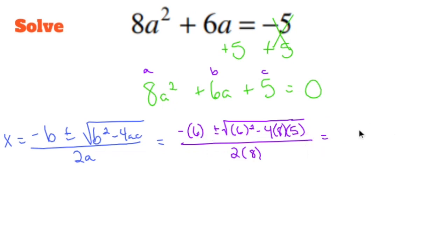All right, negative 6. I can handle that one. Plus or minus the square root. 6 squared is 36 minus, let's do this kind of a little out of order, 4 times 5 is 20 times 8 is 160. So minus 160 all over 16.